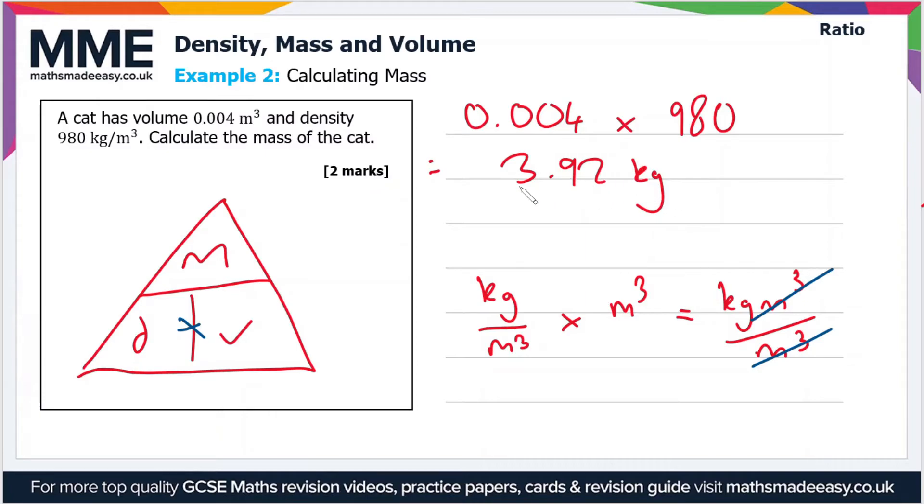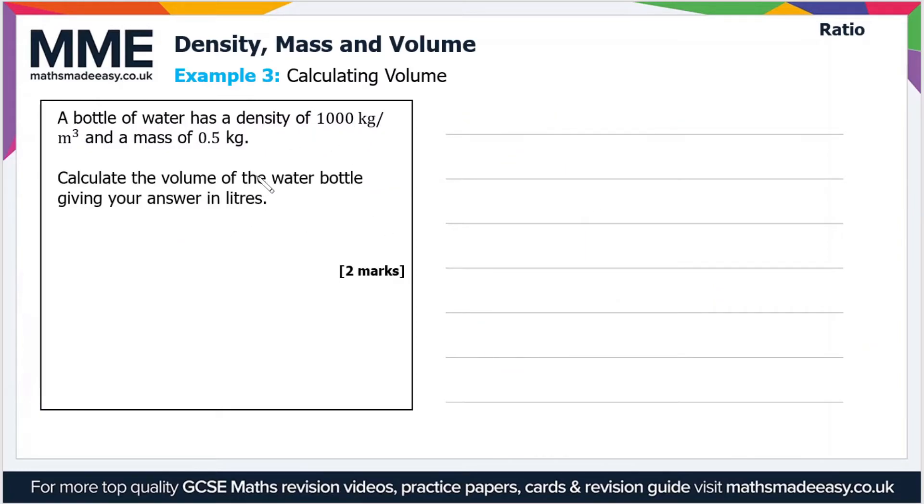Finally, example three: a bottle of water has a density of 1000 kilograms per meter cubed and a mass of 0.5 kilograms. We have to calculate the volume of the water bottle, giving our answer in liters.